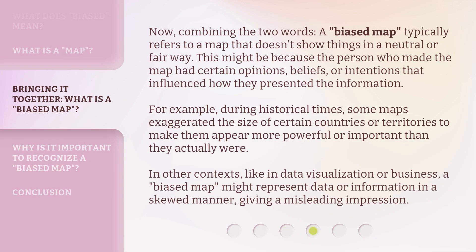Now, combining the two words: a biased map typically refers to a map that doesn't show things in a neutral or fair way. This might be because the person who made the map had certain opinions, beliefs, or intentions that influenced how they presented the information. For example, during historical times, some maps exaggerated the size of certain countries or territories to make them appear more powerful or important than they actually were. In other contexts, like in data visualization or business, a biased map might represent data or information in a skewed manner, giving a misleading impression.